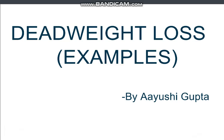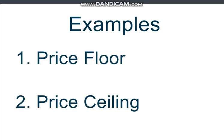In our last video we discussed about deadweight loss and how the imposition of taxes lead to deadweight loss. Today we will discuss two more examples of how externalities lead to deadweight loss. The two examples we will consider are price floor and price ceiling, and we will see how price floor and price ceiling lead to deadweight loss.